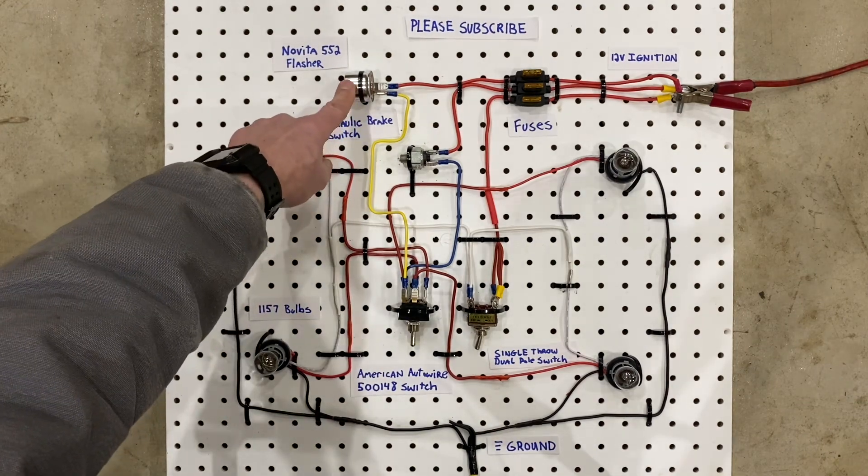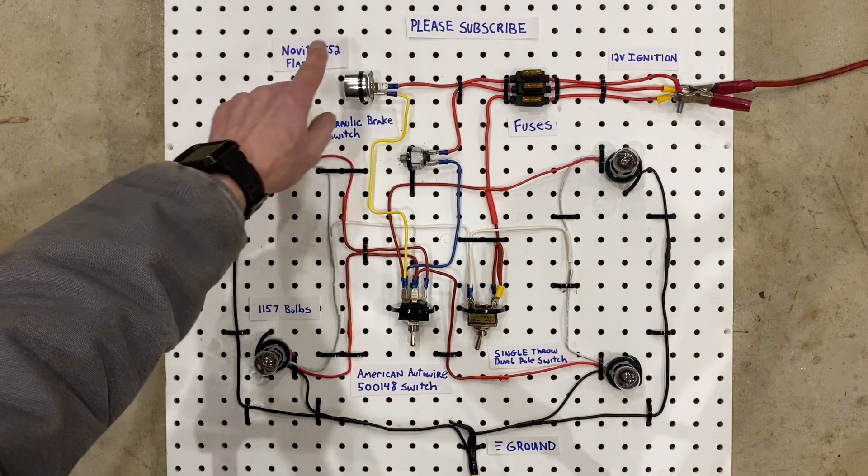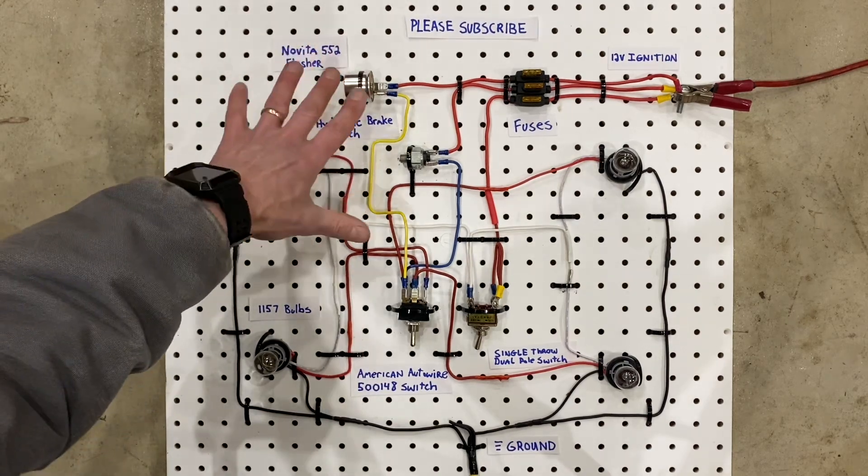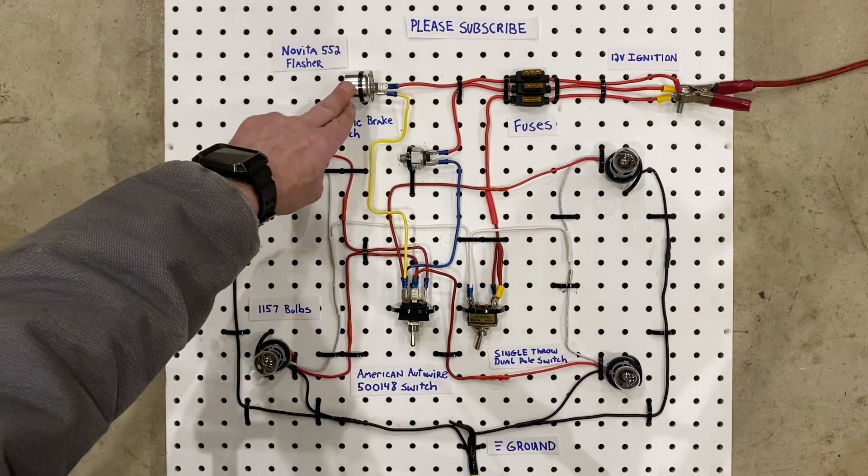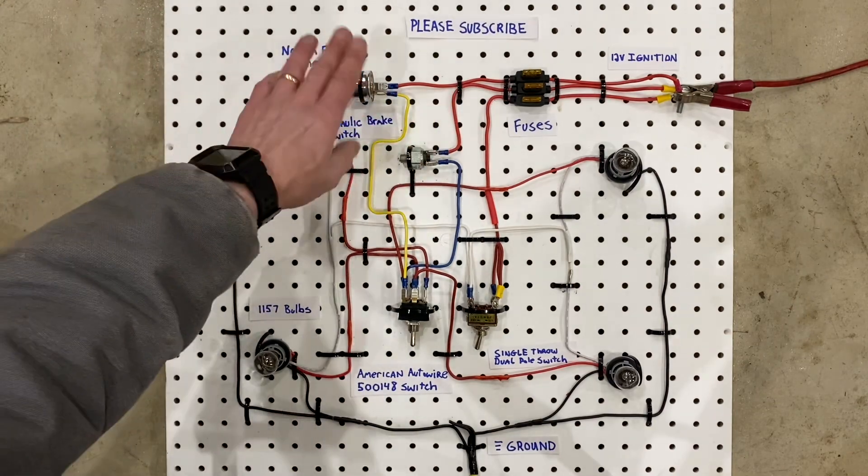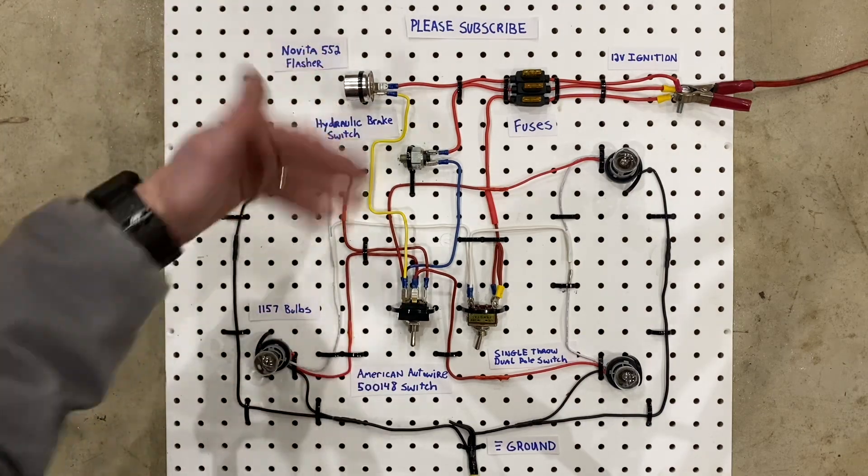This right here is a turn signal flasher. This is a two terminal flasher made by Novita, and it's Novita 552 is the part number. These flashers are super common. They're found in like every single car on earth. Sometimes you even have a separate one for the hazard switch and a separate one for the turn signals. They're super cheap, and they make your turn signals flash.